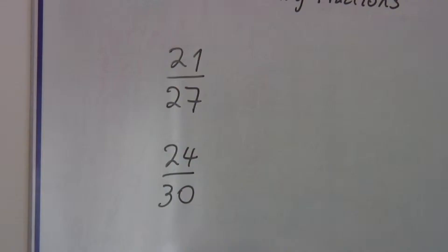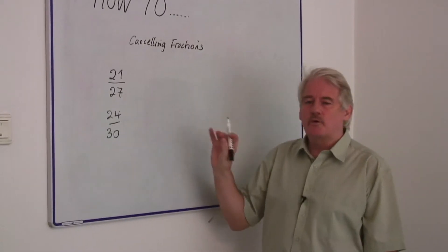We know what a fraction looks like. Twenty-one over twenty-seven is a fraction. Twenty-four over thirty is a fraction. I'm using numbers like this because it's slightly more difficult.